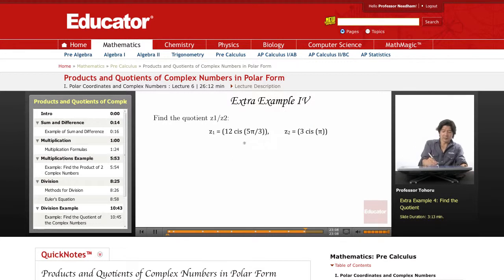Now it's a quotient, so we do Z1 over Z2. So we know very easily it's R1 over R2, which we know is 4. 12 divided by 3 is 4.